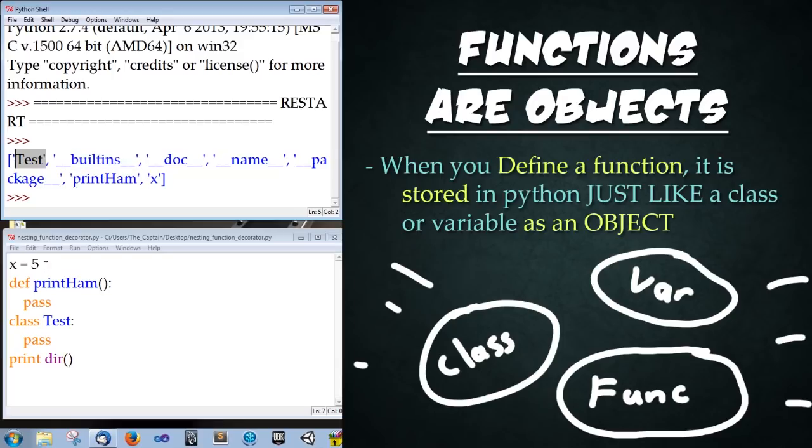Alright and so what python spit out is a list of all objects that are currently active and available. So we have test the class that we created here. We have print ham the function that we created and the variable x which we created up top. Python is reading these all as objects.